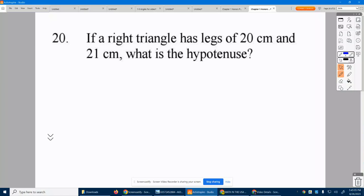Number 20, if a right triangle, okay, so I have a right triangle, meaning 90 degrees right here, has legs of 20 and 21. So this leg is 20 and this guy is 21. And let's find the hypotenuse.